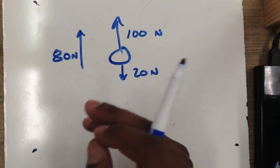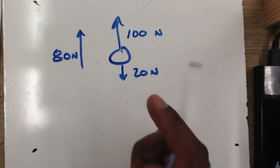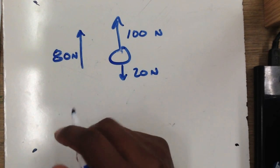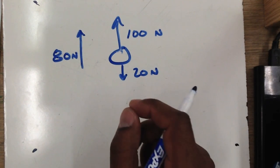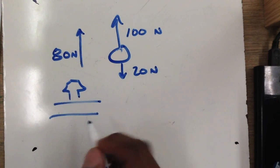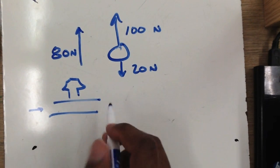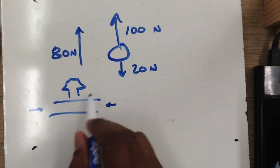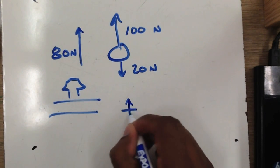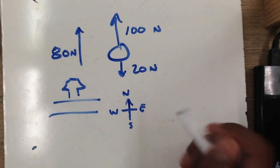Forces are vectors and therefore require a reference direction. For example, if I asked which side of the street you live on and you said the left side, that wouldn't be very accurate because you don't have a frame of reference. If you're traveling one way, the house is on the left; traveling the other way, it's on the right. So you need a reference direction — like using a compass to say you live on the north side of the street.